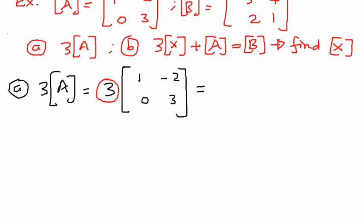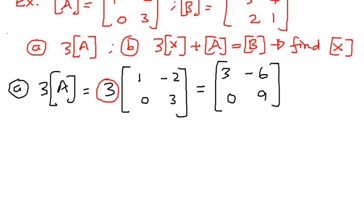So we do it as follows: 3 times 1 is 3, 3 times negative 2 is negative 6, 3 times 0 is 0, and 3 times 3 is 9. We have successfully distributed the scalar quantity to every one of the elements inside the matrix.